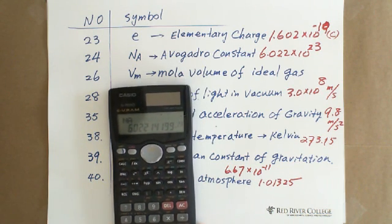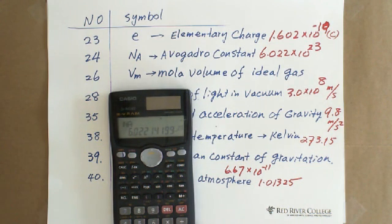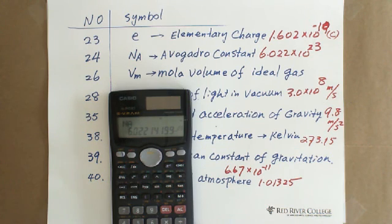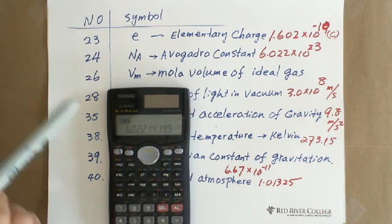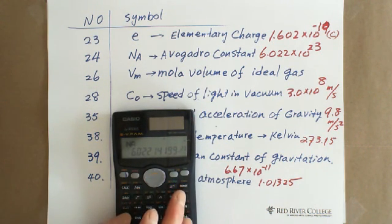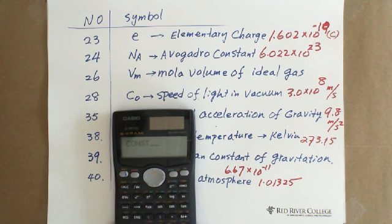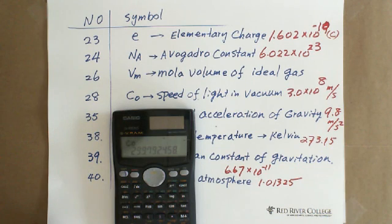Also in chemistry, we need the molar volume of ideal gas, which is at STP — at the standard temperature, which is 0 degrees Celsius, 1 atmosphere. Any ideal gas occupies 22.4 liters of space, which is volume. This is constant 26. And also in physics, the speed of light — you can see constant 28. The speed of light is 3.0 times 10 to the 8 exponent meters per second.